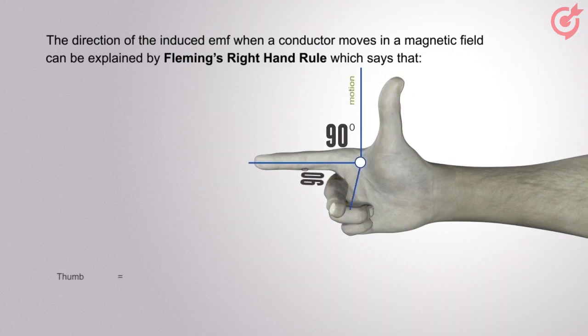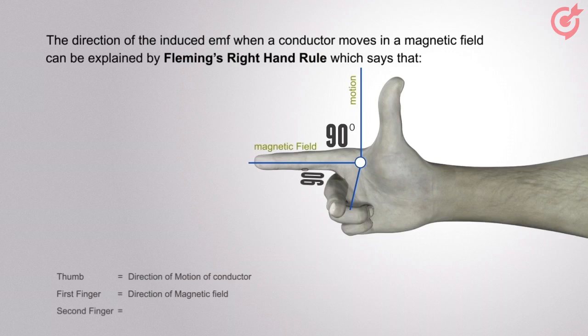If the thumb represents the direction of motion of the conductor and the first finger represents the direction of the field, then the second finger would give the direction of the induced EMF in the conductor.